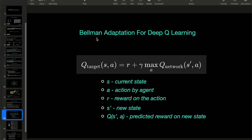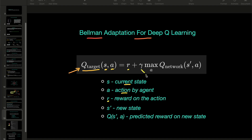Before going to an example, we'll talk about Bellman equation for deep Q learning. We compute the target Q value using this Bellman equation. This is the Q target. S stands for current state, A stands for action, R stands for reward, gamma is the discount factor, and S prime is the new state, with A being the action in the new state.